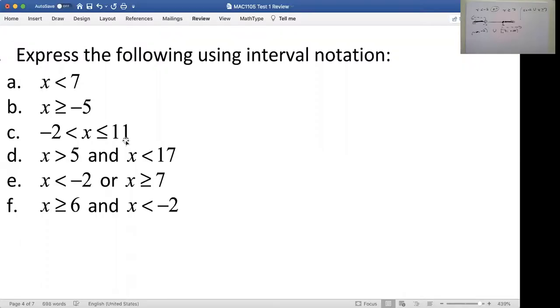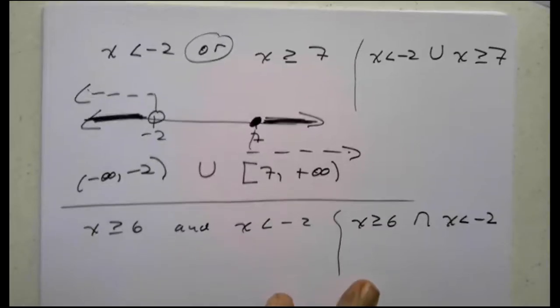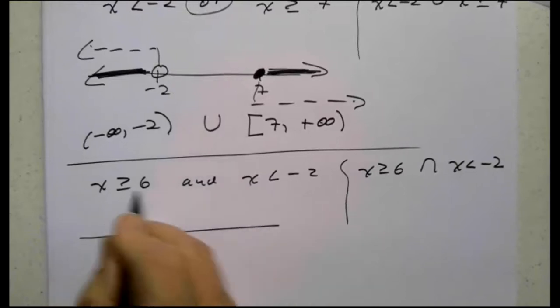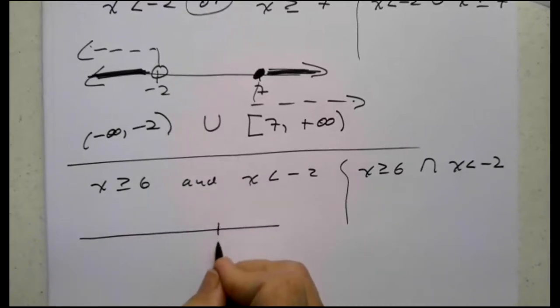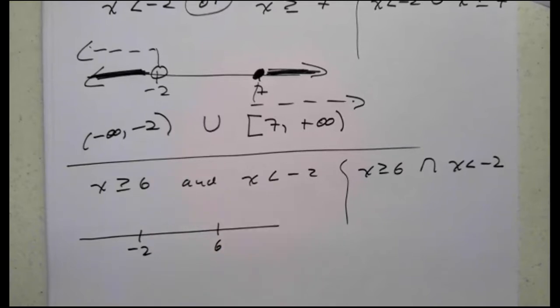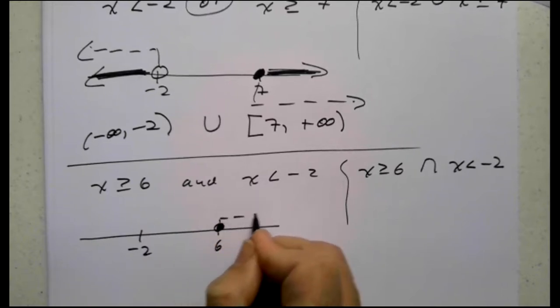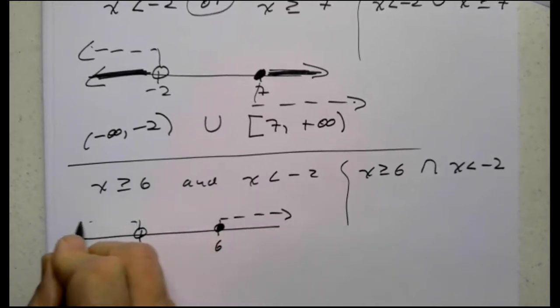And I believe there's one more. Finally, x is greater than or equal to 6 and x is less than negative 2. Which of course the other notation I could say is x greater equal to 6, intersection, x is less than negative 2. So, and both have to be true simultaneously. 6, negative 2. 6 is to the right, negative 2 is to the left. That's important. So let's look at this piece, greater than or equal to 6, 6 headed this way, less than negative 2, headed that way.